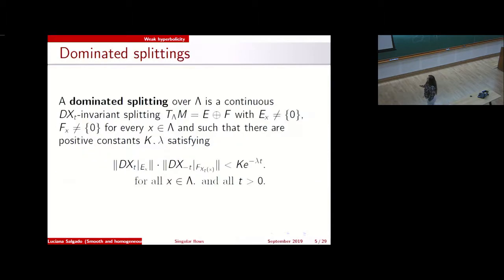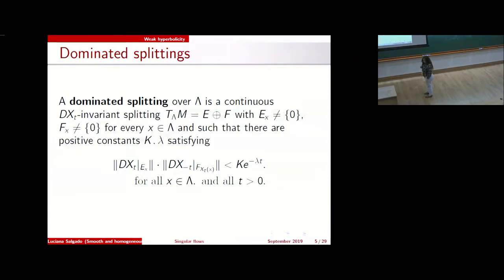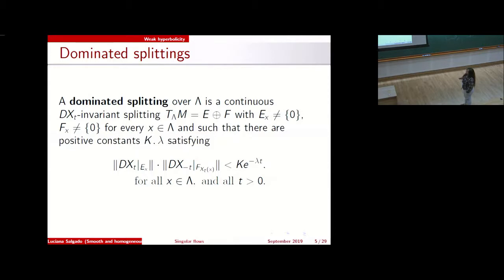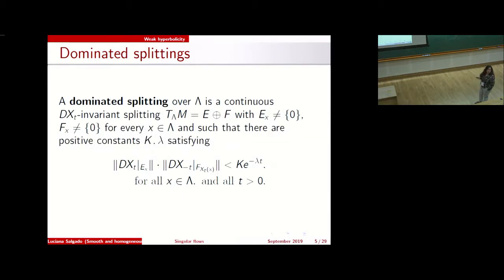Then we have a weaker kind of hyperbolicity that emerged in the study of the Palis conjecture. Liao, Mañé, and many researchers worked on it. Dominated splitting, for me, is a two sub-bundle splitting of the tangent bundle where none of them is trivial, and we have this kind of decay — the domination property.